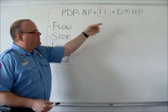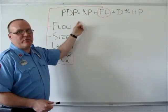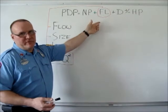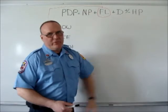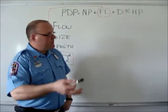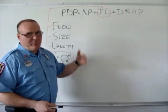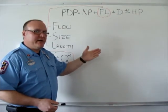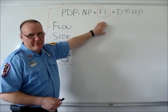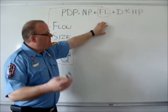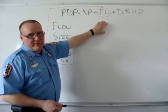And we identified the four elements as being the NP or the nozzle pressure, the FL or friction loss, the D for devices or appliances, and then the HP for your head pressure or your elevation pressure. In that example we used pre-connected attack lines and we used a fixed friction loss that we would figure for two inch, inch and three quarter or inch and a half hose. What Mifrey teaches is 30 pounds per 100 feet.